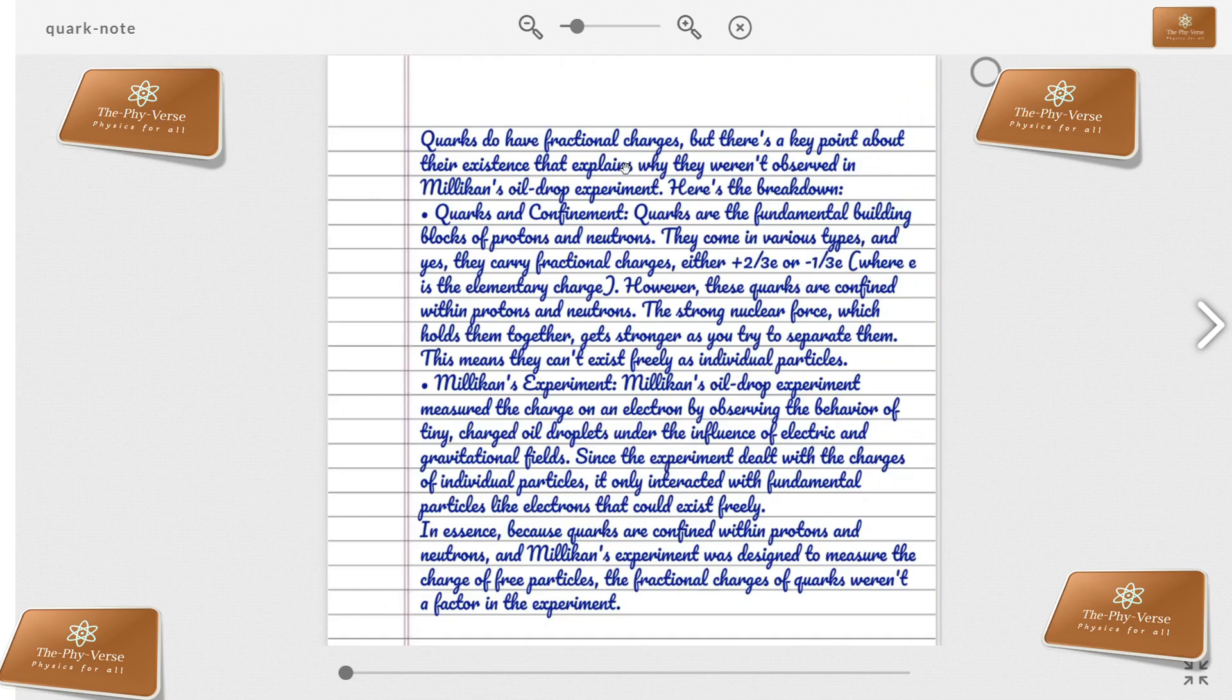Now let's discuss Millikan's experiment. Millikan's oil drop experiment measures the charge on electrons by observing the behavior of tiny charged oil droplets under the influence of electric and gravitational fields. Since the experiment dealt with charges of individual particles, it only interacted with fundamental particles like electrons that could exist freely. Because quarks are confined within protons and neutrons, and Millikan's experiment was designed to measure the charge of free particles, the fractional charges of quarks were not a factor in the experiment.